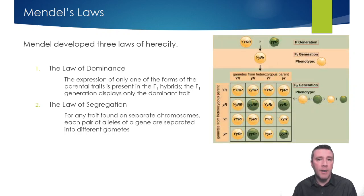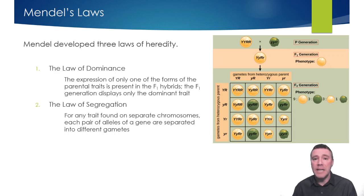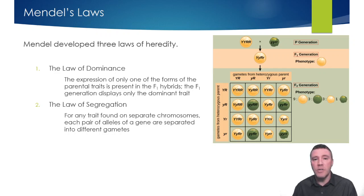This dihybrid cross illustrates both the Law of Segregation and the importance of probability. The F1 generation individuals are heterozygous for both pea color and pea shape. Therefore, the possible gametic combinations of alleles are such that there is a 25% chance of a gamete containing both dominant alleles, a 25% chance of the recessive color and dominant shape alleles, a 25% chance of the dominant color but the recessive shape allele, and a 25% chance of both recessive alleles.